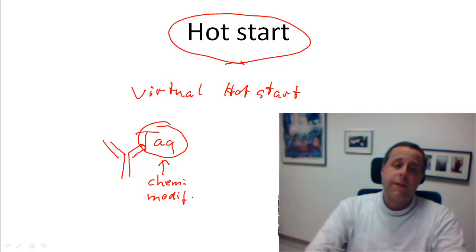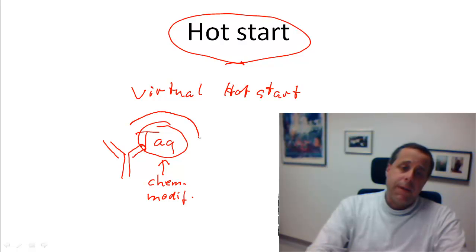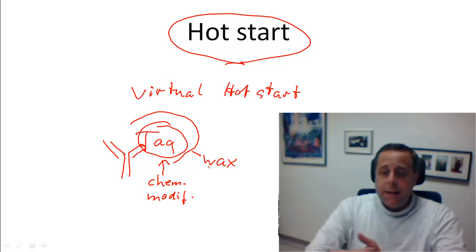The third possibility to do this virtual hot start is to have the Taq polymerase in wax beads. So the wax would also melt only once you heat up the enzyme. And then the convection, that is the turnover in the fluid that is a result of heating up, would also mix the reaction.